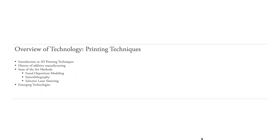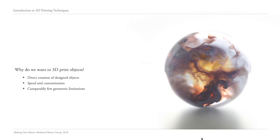We're going to go over a little bit of the introduction to 3D printing techniques, starting with the history of how these technologies evolved with early forms of additive manufacturing. Then we'll dive into three common methods in more detail — how they work, how information is processed on these machines, and what to expect from their outputs. We'll also do a lightning round of emerging technologies that might be very promising in the next five to ten years.